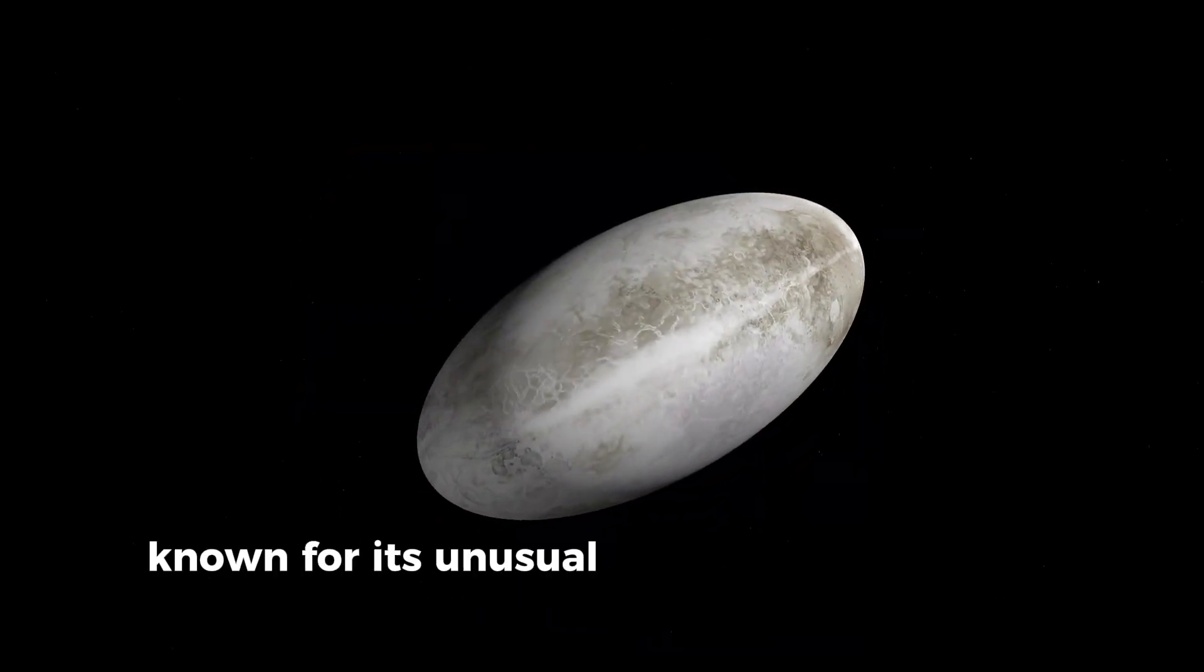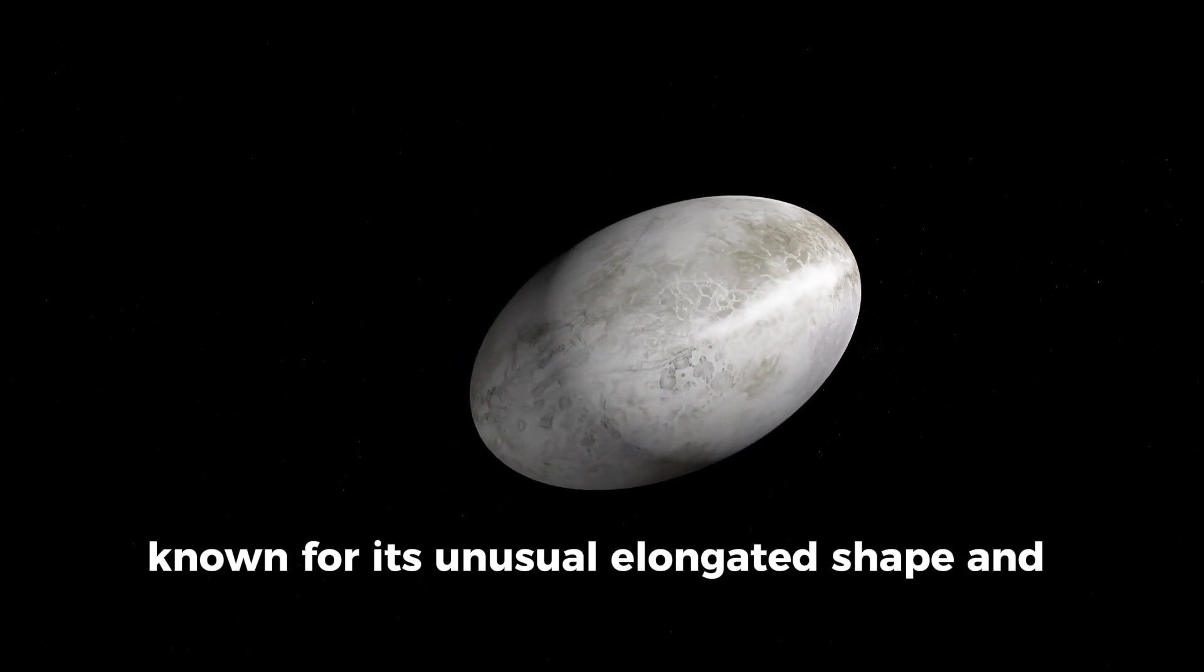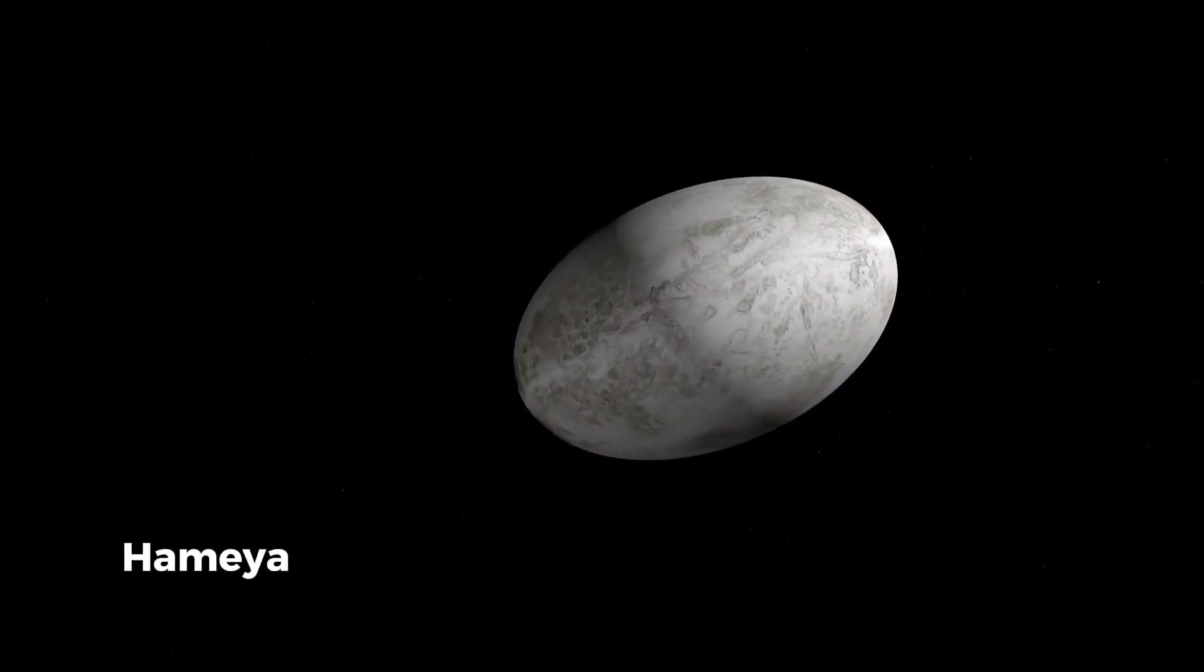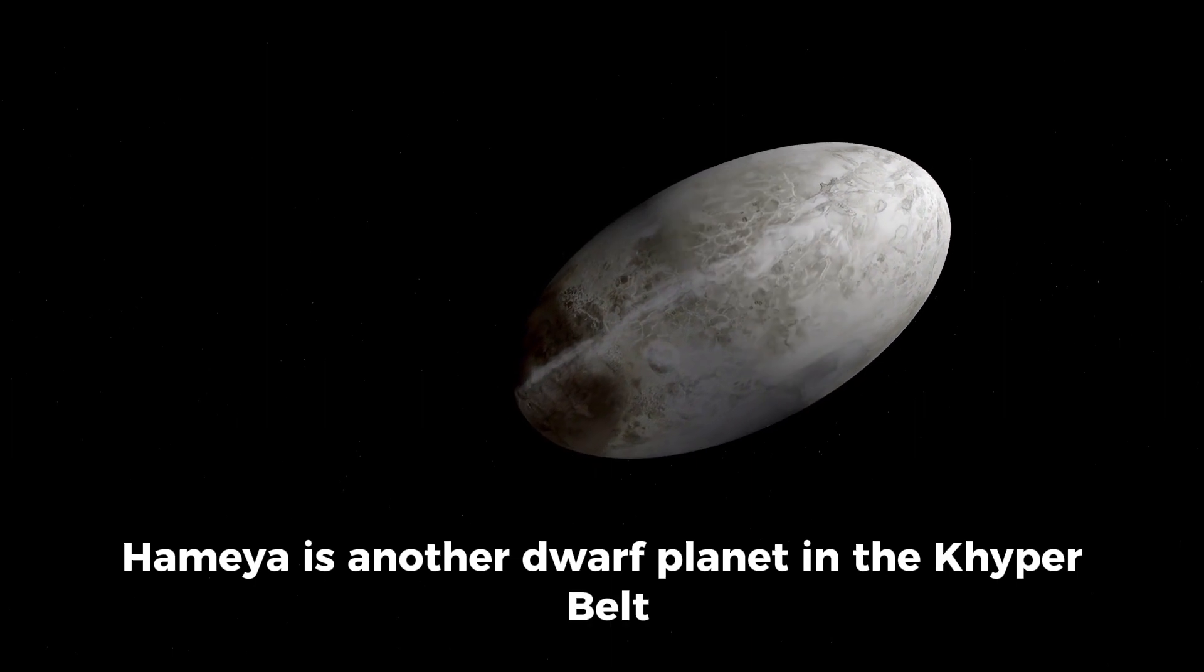Haumea. Known for its unusual, elongated shape and fast rotation, Haumea is another dwarf planet in the Kuiper Belt.